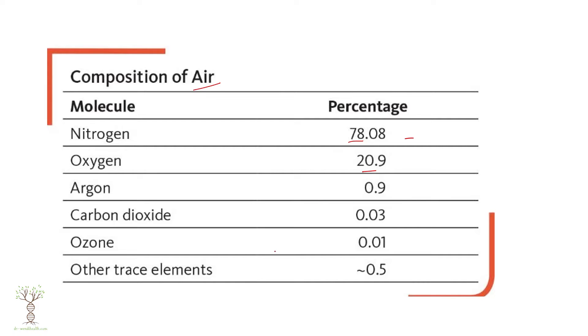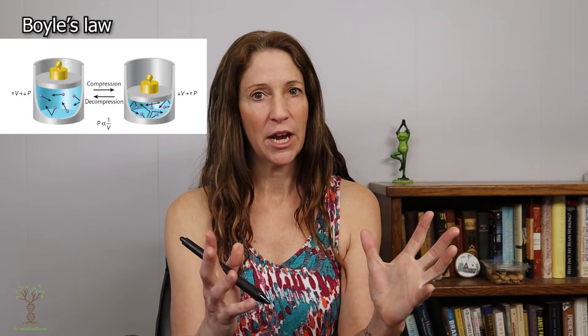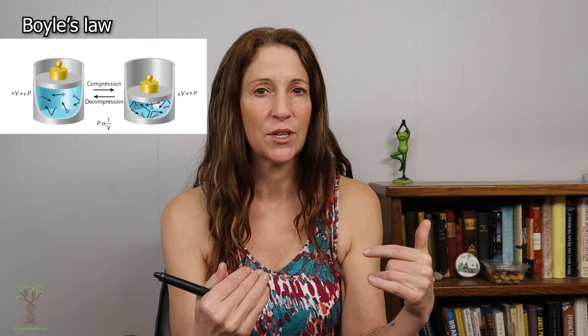In the last video we looked at Boyle's law — when we increase the volume of a container of air we decrease the pressure, and when we decrease the volume we increase the pressure, and that is what allows us to move air in and out of our lungs. The next law I want to look at is Dalton's law.